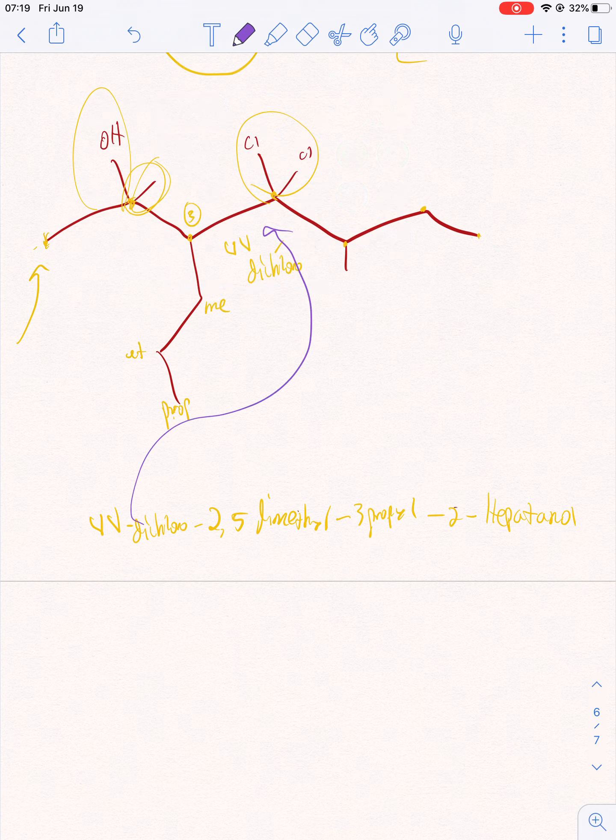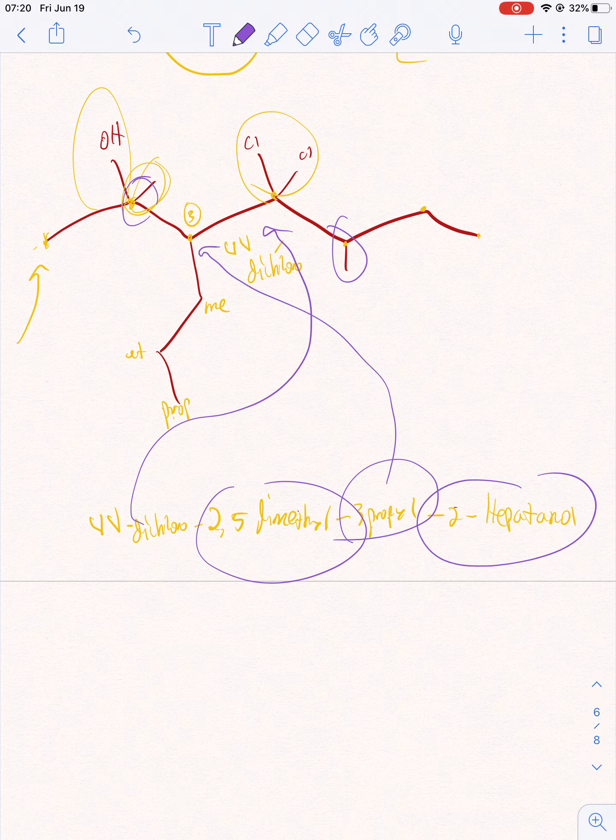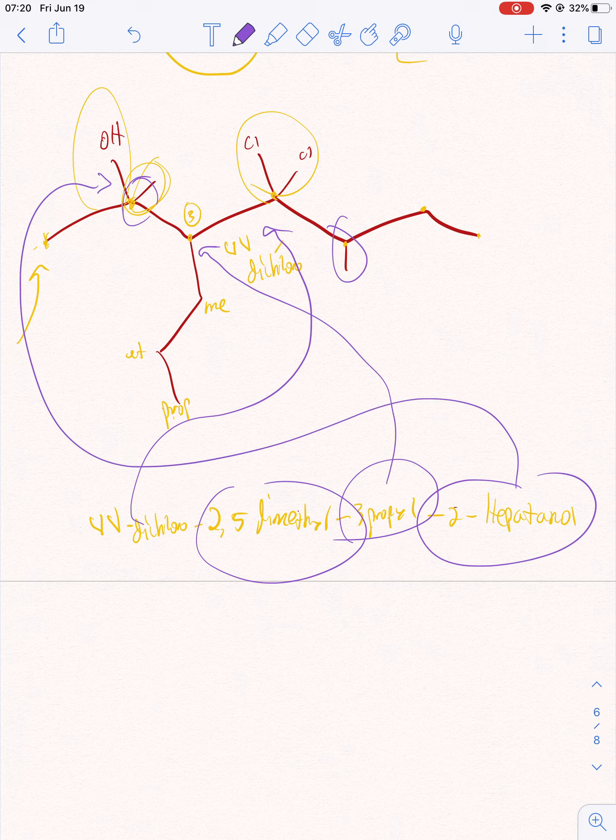So four, four dichloro. Two, five dimethyl - on the second and fifth carbon there is a methyl group. Three propyl - on the third carbon there's a propyl group. Two heptanol - on the second carbon there's an OH.